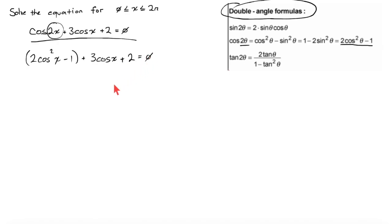Plus 3 cosine of x plus 2 is equal to 0. And you might be wondering if this looks any better at all. Believe me it does. Let me simplify this a little bit: 2 cosine squared of x plus 3 cosine of x plus 1 is equal to 0.